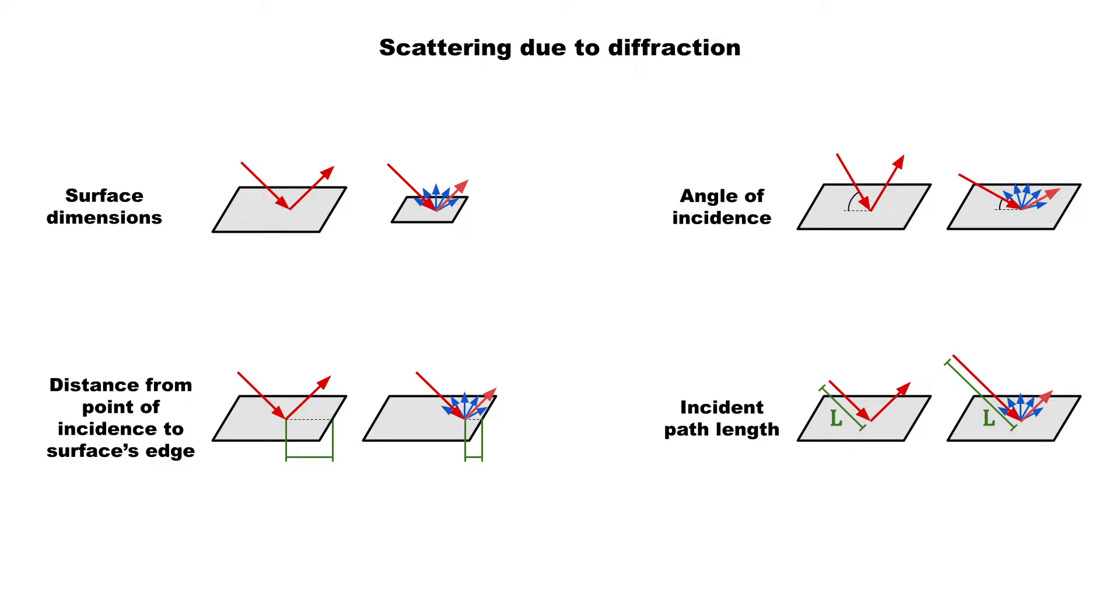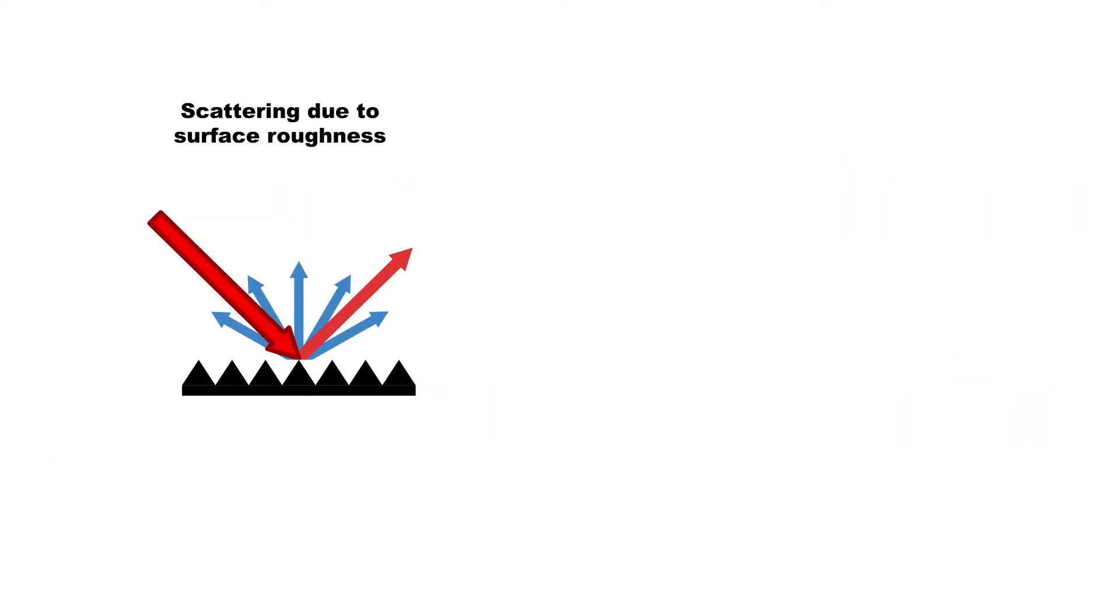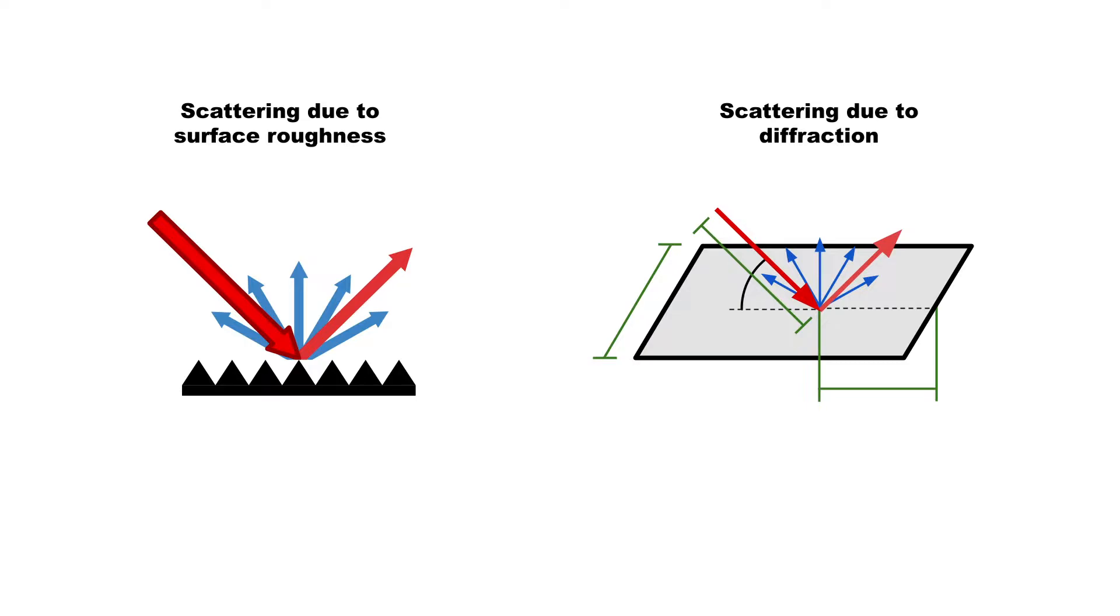Considering these factors, the full amount of scattering for each reflection cannot be known before actually running the calculation. Therefore, ODEON separates scattering in two parts. The first is the scattering due to surface roughness, and the second is the scattering due to diffraction.